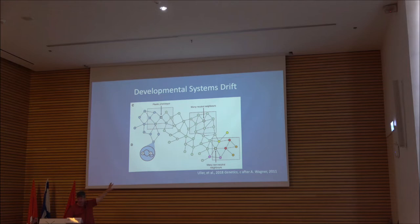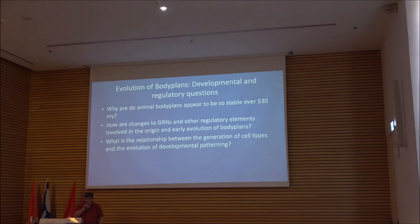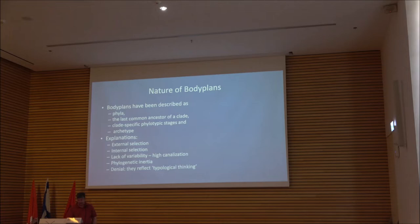Most of the work on the sea urchin gene regulatory network has been done by Eric Haig and his colleagues. That leads to these problems about body plans and GRNs. But the other way of conceiving them is to look at the evolution of novelty — in a sense, it's the same set of questions posed in a different fashion. And that's what Günter Wagner has done.